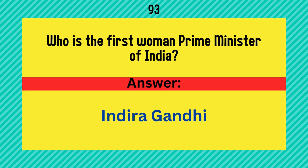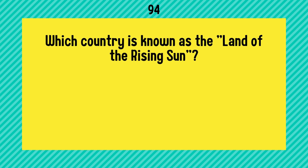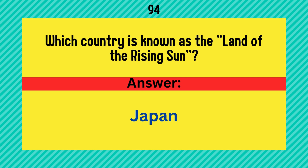Who is the first woman Prime Minister of India? Answer is Indira Gandhi. Which country is known as the land of the rising sun? It is Japan.